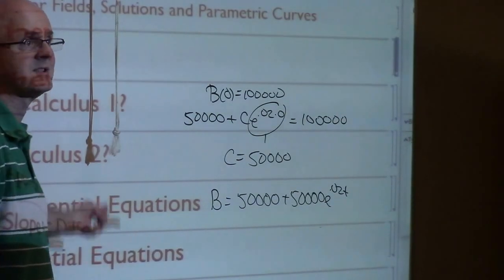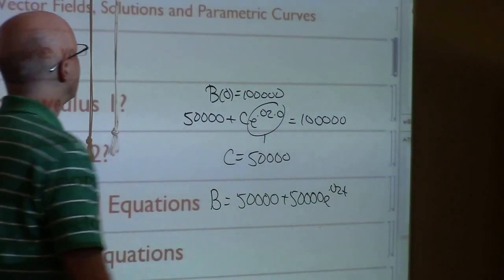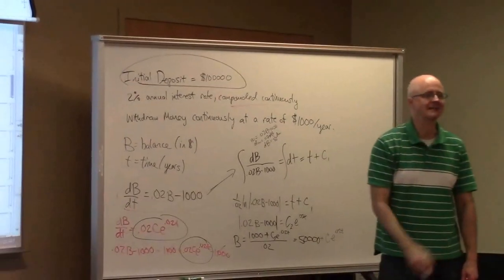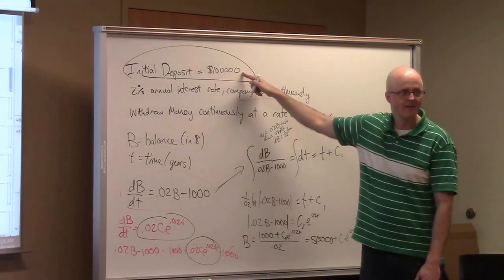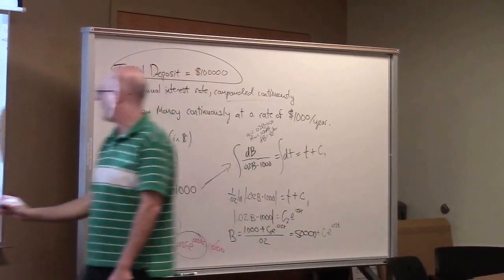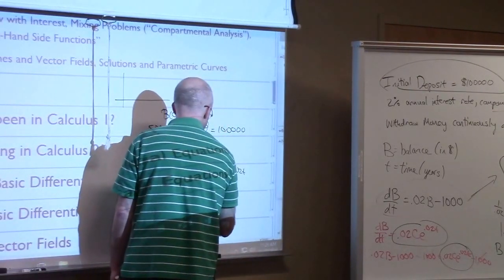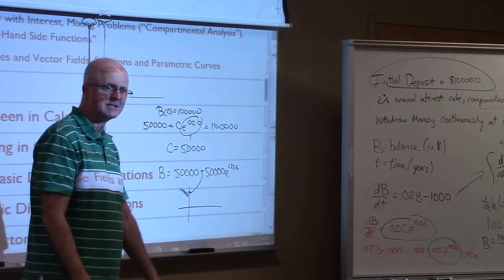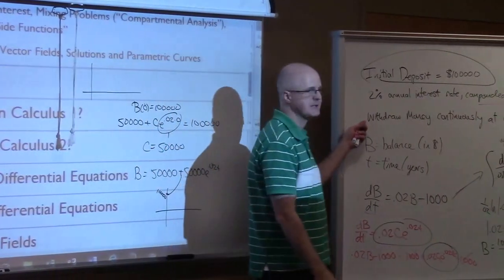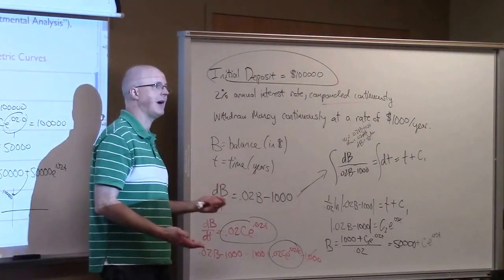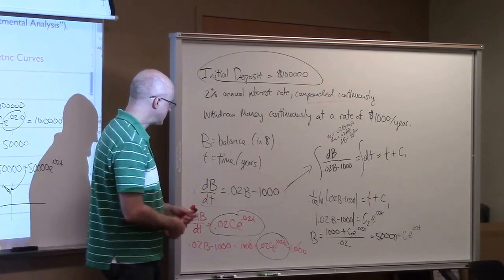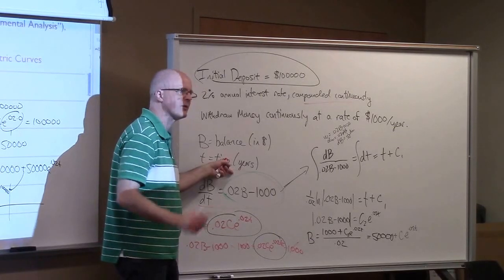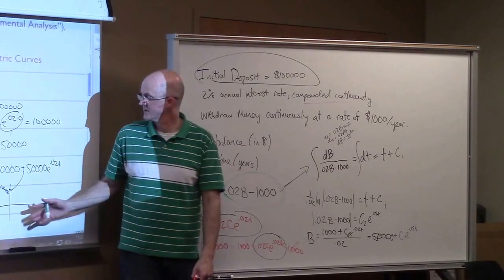Will we run out of money? No — in fact the money still grows. Even though we're making continuous withdrawals, the money is still growing. This makes intuitive sense because we're only withdrawing $1,000 per year, while the 2% interest rate gives approximately $2,000 per year at the start. But would that happen for all initial deposits? No — and that leads us to examine the phase plane.